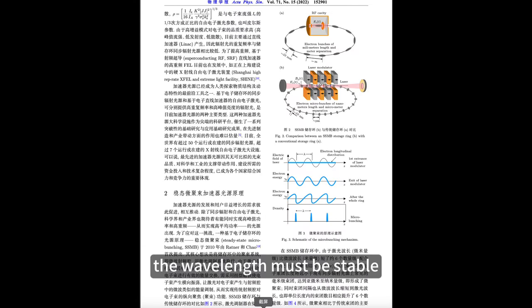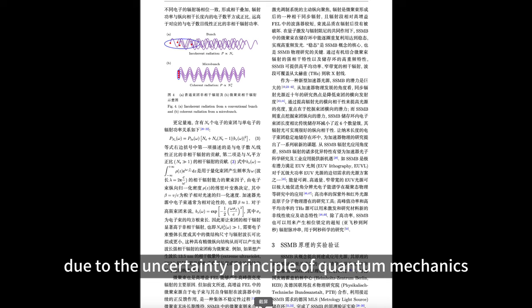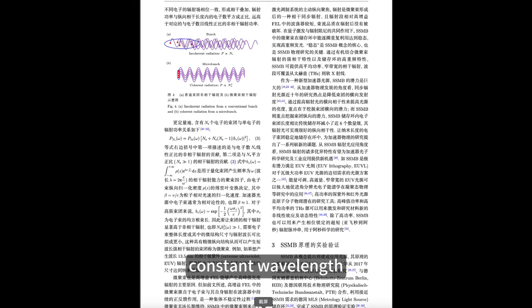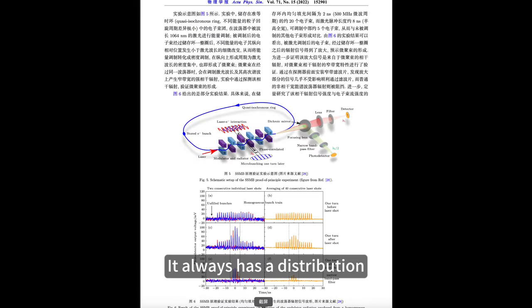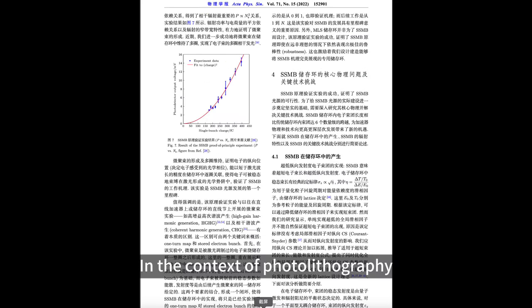Secondly, the wavelength must be stable. What does that mean? We know that due to the uncertainty principle of quantum mechanics, no light source emits a single constant wavelength. It always has a distribution known as the bandwidth. In the context of photolithography, you want your light knife to be sharp.